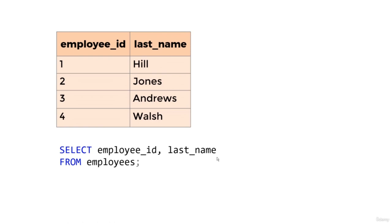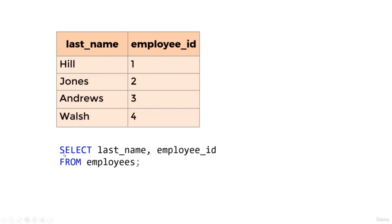We can also change the order of the columns returned by the query — for instance, we could specify last name first: SELECT last_name, employee_id. Note that the SELECT statement does not change the order of columns in the underlying table, and by itself does not change the underlying table in any way.